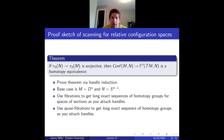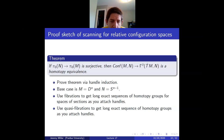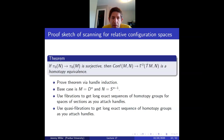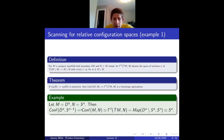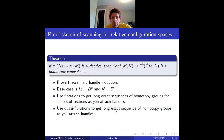For most of this class, the proof will be fairly sketchy. We prove this theorem similarly to how we proved space-level Poincaré duality: by induction, picking a handle decomposition of M compatible with N. The base case is the disk rel sphere, which we already proved last class. We'll use quasi-fibrations to get long exact sequences in homotopy groups, then use the five lemma.